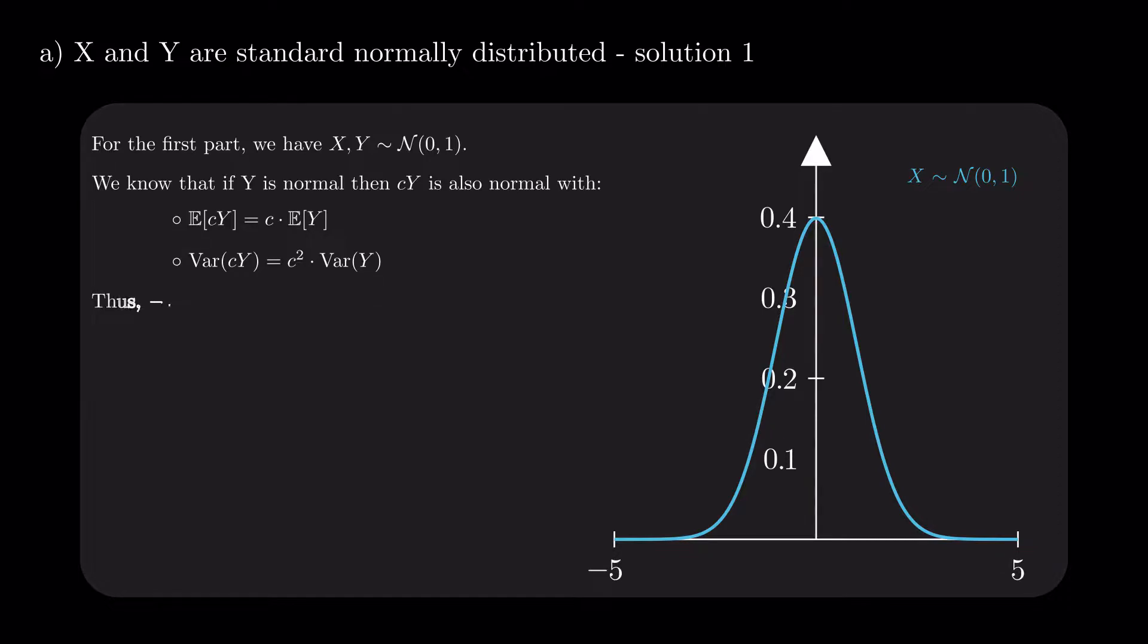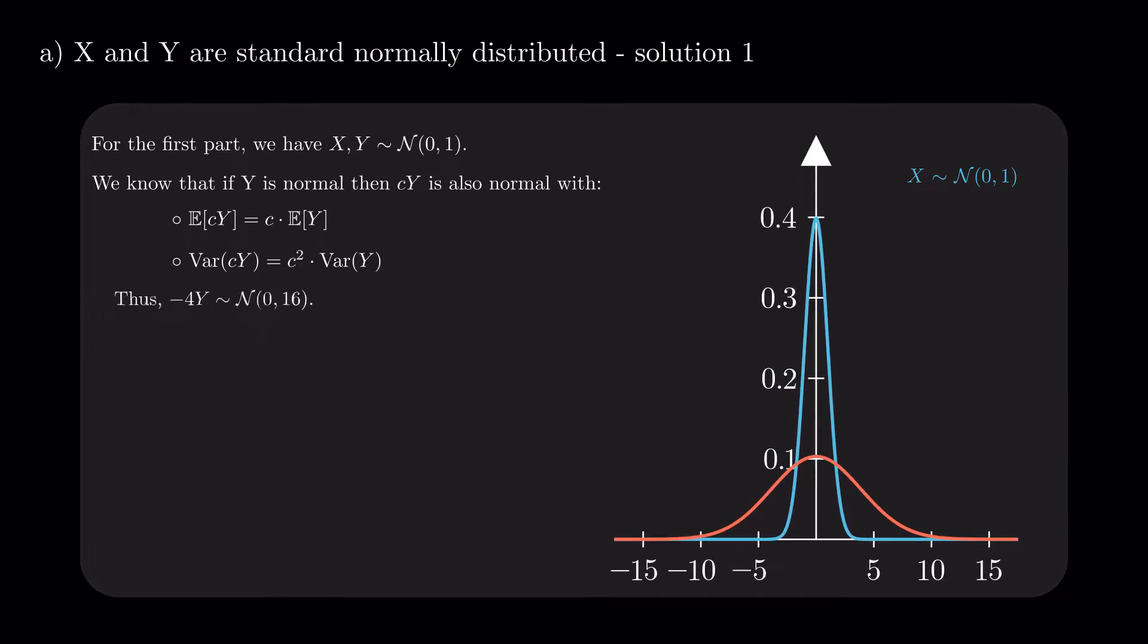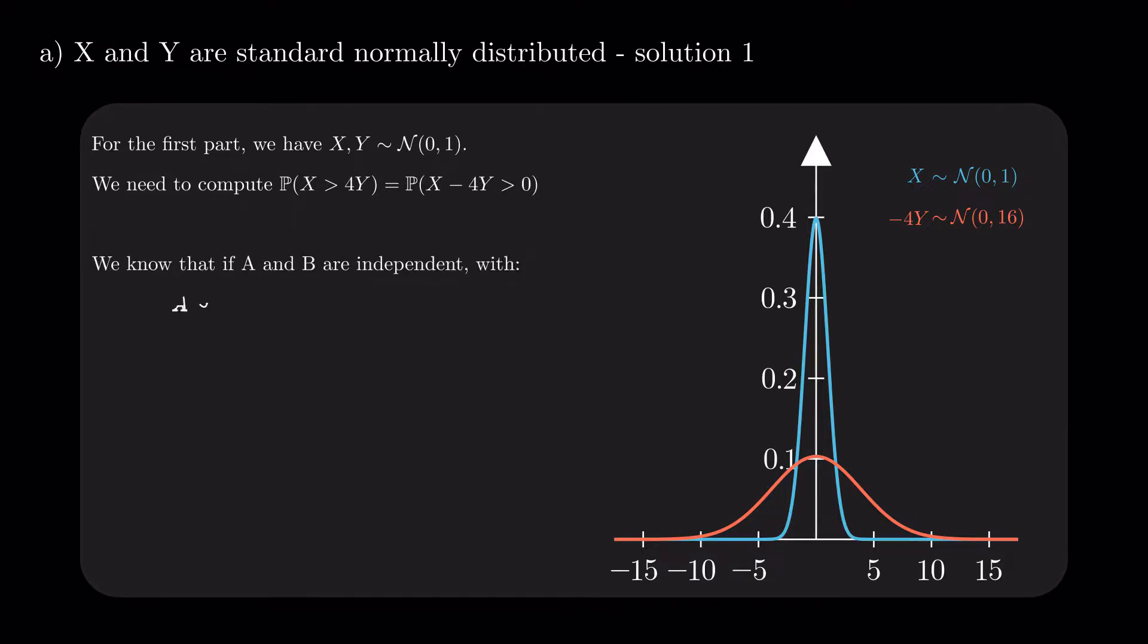The above implies that the random variable -4Y has a normal distribution with mean 0 and variance 16. Now we have both parts of the comparison we want to make. We can rewrite X > 4Y as X - 4Y > 0. We also remember the rules pertaining to summing two independent, normally distributed random variables and apply them to X and -4Y.